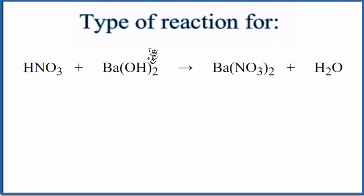In this video we'll look at the type of reaction for HNO3 plus Ba(OH)2. This is nitric acid and this is barium hydroxide.